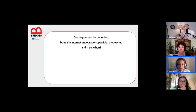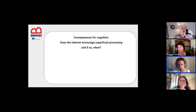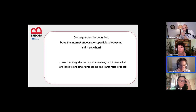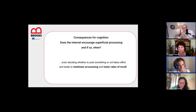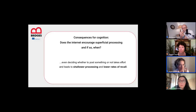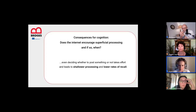Does the internet encourage superficial processing? This is a mixed area. With social networks becoming more prominent, we seem to be becoming shallower learners — used to switching continuously from one piece of information to another, from one comment to another, which may be becoming very natural for us.